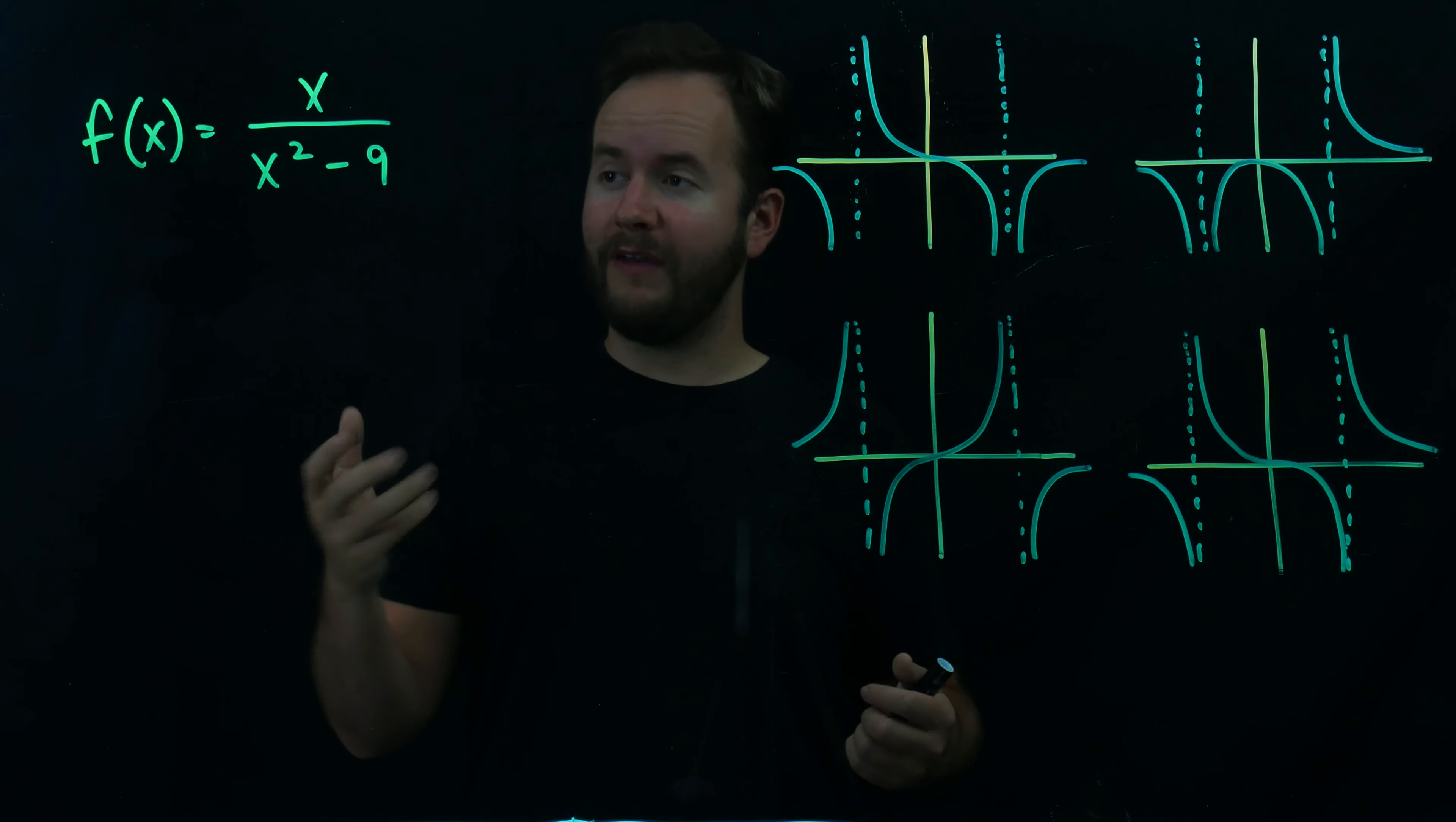So what we're going to do first is find some graphical features. We've got vertical asymptotes at x equals 3 and x equals negative 3, because x squared minus 9 factors into x minus 3 times x plus 3. We also have an x-intercept at x equals 0.